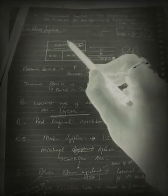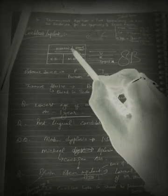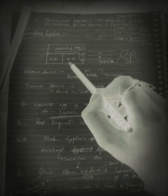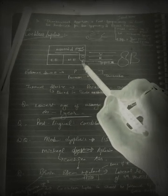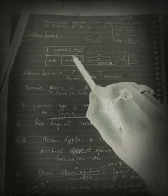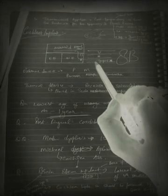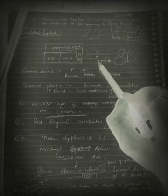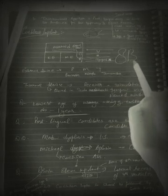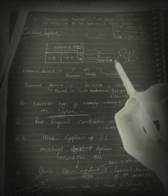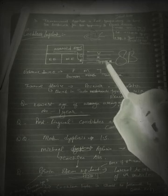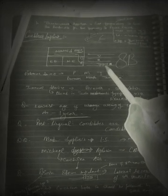The internal device consists of a receiver-stimulator, which is placed in the scala tympani via the round window. If you see this diagram, this is the mastoid cavity, external auditory canal, middle ear, and then the internal ear. The electrode is placed via the round window into the scala tympani of the vestibule, connecting to the 8th nerve and going to the brainstem.